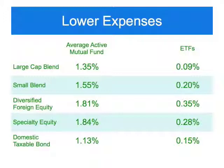We've seen from principle one that it's difficult to consistently beat the markets even for the professionals, and this slide shows exactly why — it comes down to expenses. There are two types of mutual funds: actively managed and index mutual funds. Actively managed funds have a person or team of people who buy and sell stocks in hopes of beating the market.